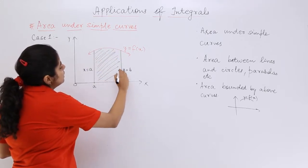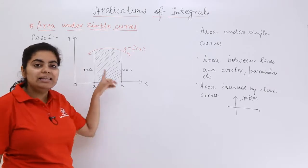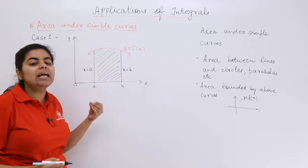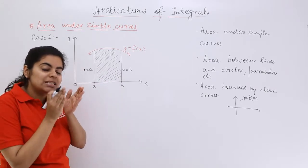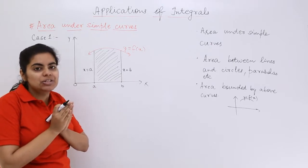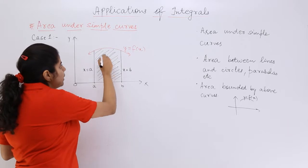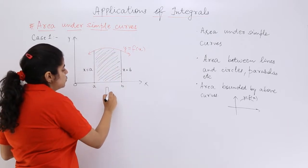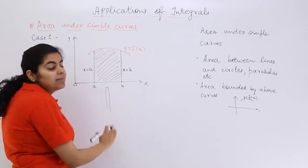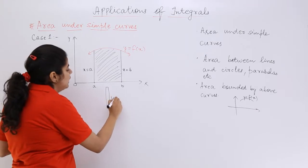this type of area can be computed with the help of very small rectangular strips. So if I take a strip, the strip would be something like this, placed here. The strip is having the height as y and the width as dx, because it is a very small minute rectangular strip that we are going to consider.